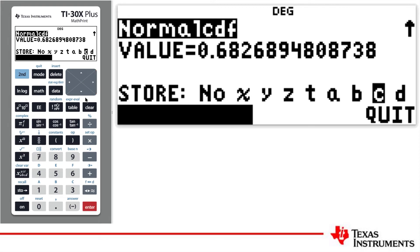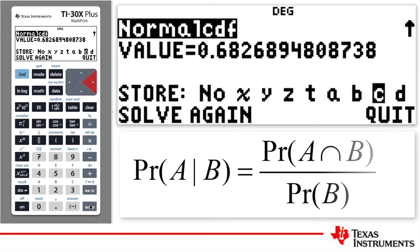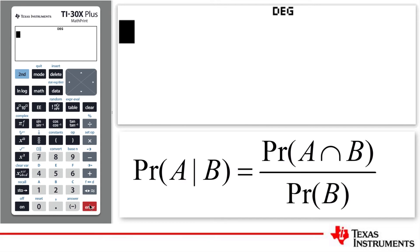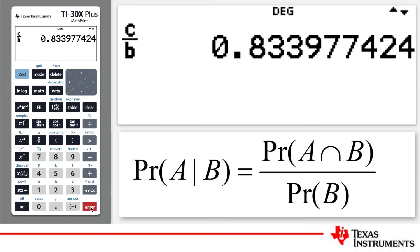So, the probability of A given B is simply 0.6827, the value that I stored in C, divided by 0.8185, the value that I stored in B. If you want to see these values, you can use the Recall option.